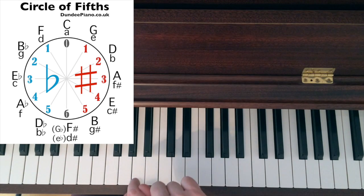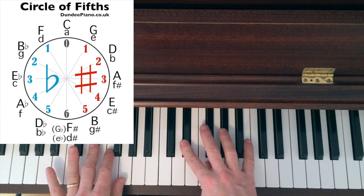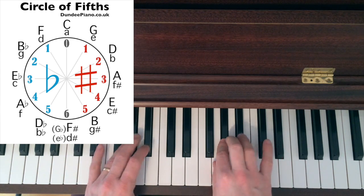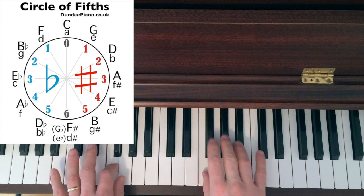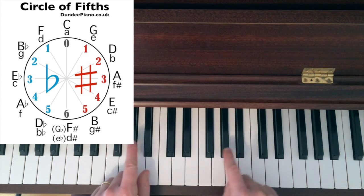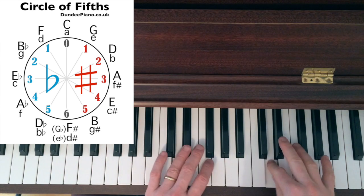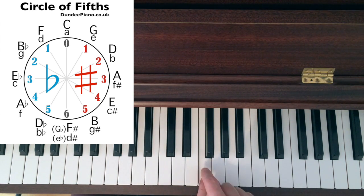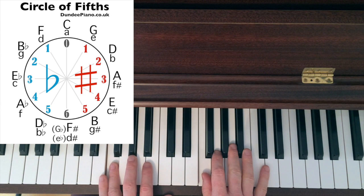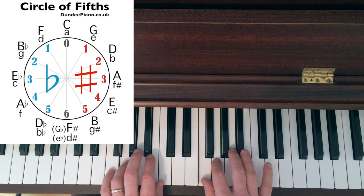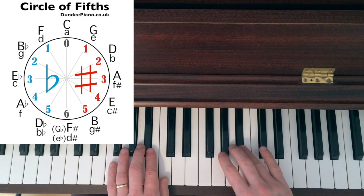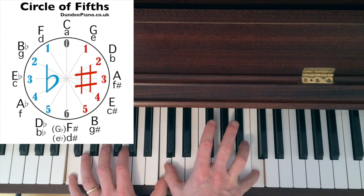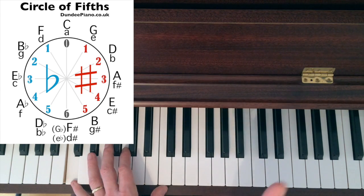So from E flat they have A flat, B flat, and E flat. Okay? Up five from there is B flat. B flat, which only has two flats this time. B flat and E flat. So five up from there, F, which only has one flat. B flat. So five up from there, C. So the circle has come full circle. Back to C major again.